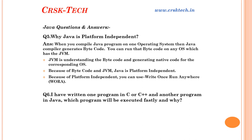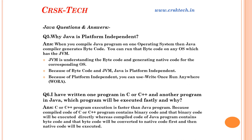Question number six: I have written one program in C or C++ and another in Java — which program will execute faster and why? The answer is C or C++ program execution is faster than Java. Because when you compile a C or C++ program, the compiler directly converts source code into machine code, which you can execute directly on the machine. But the Java compiler converts source code into bytecode first, then the Java interpreter converts bytecode into machine code — so there are two processes. That's why C or C++ execution is faster than Java.